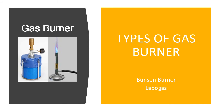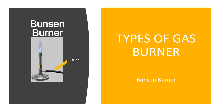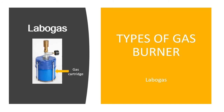Two types of gas burner are used in the laboratory: the Bunsen burner and the labo gas. The Bunsen burner was developed by German chemist Robert Bunsen. It is attached to a gas source, with a tube connecting the burner to the gas tank. The labo gas is another type of burner used in the laboratory, and it has a gas cartridge attached to it.